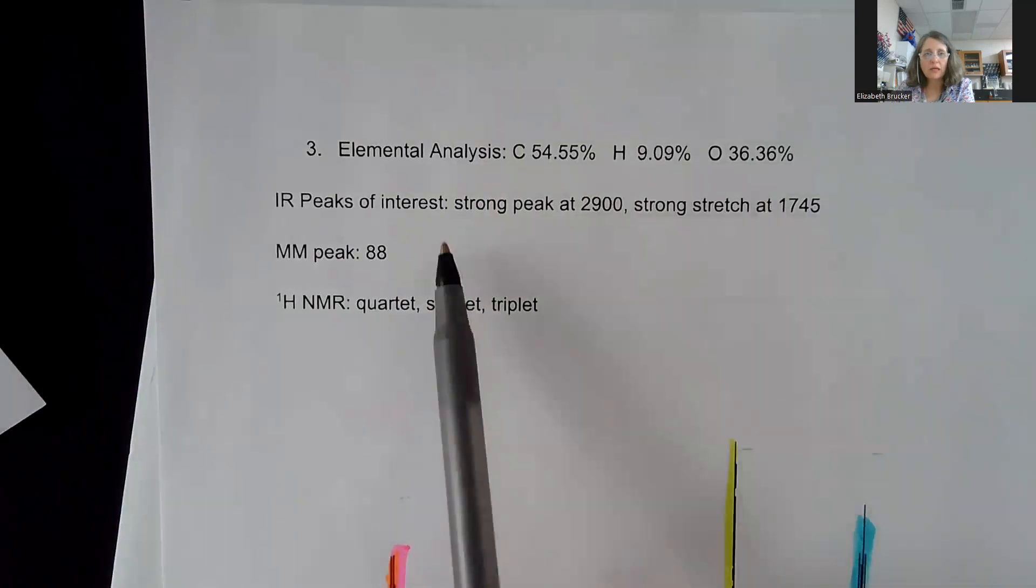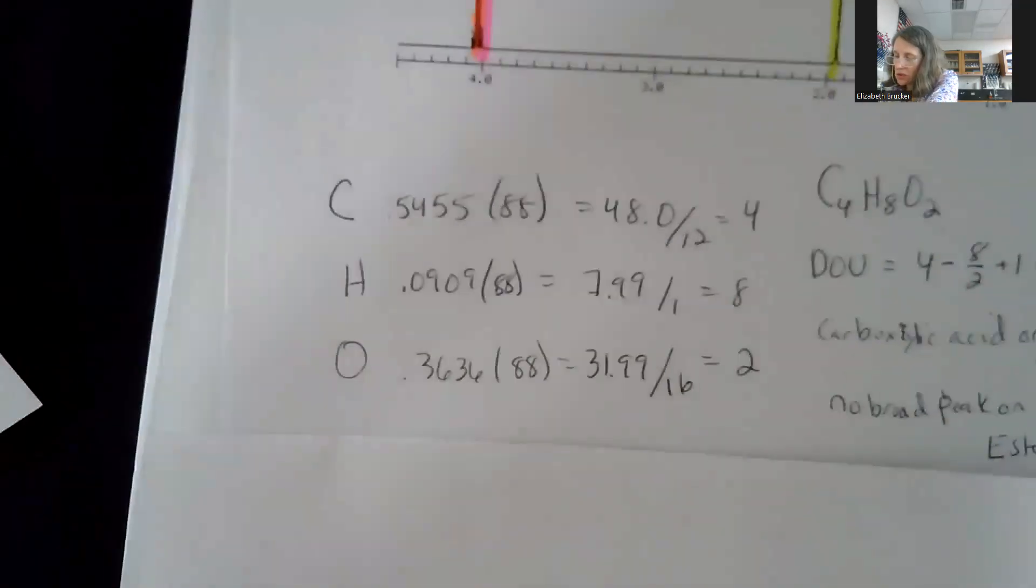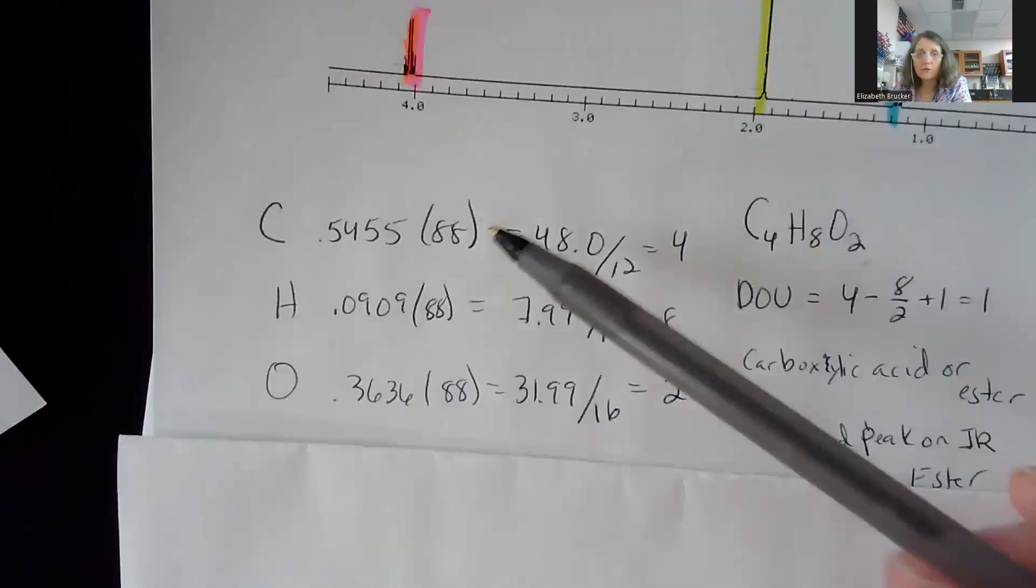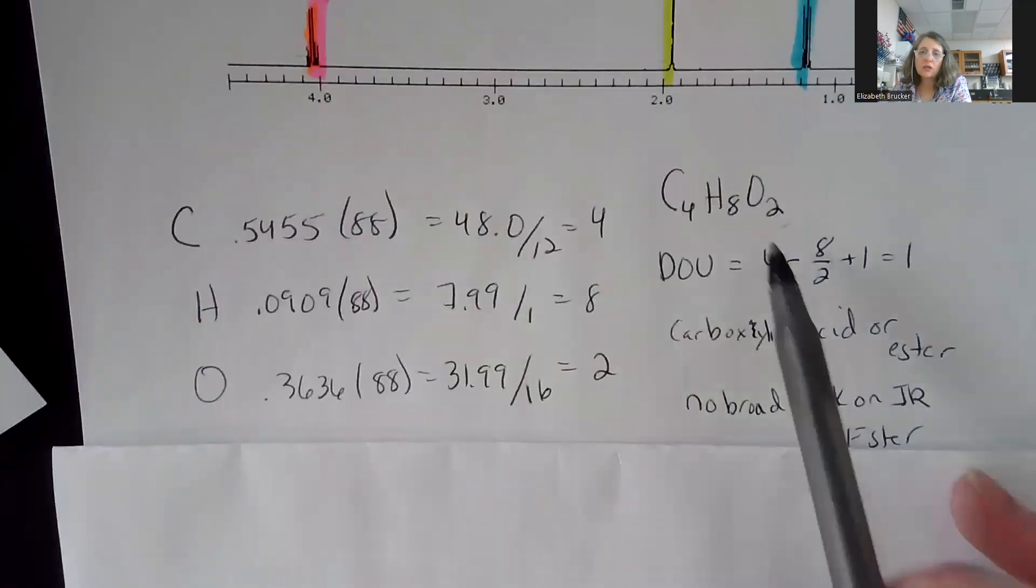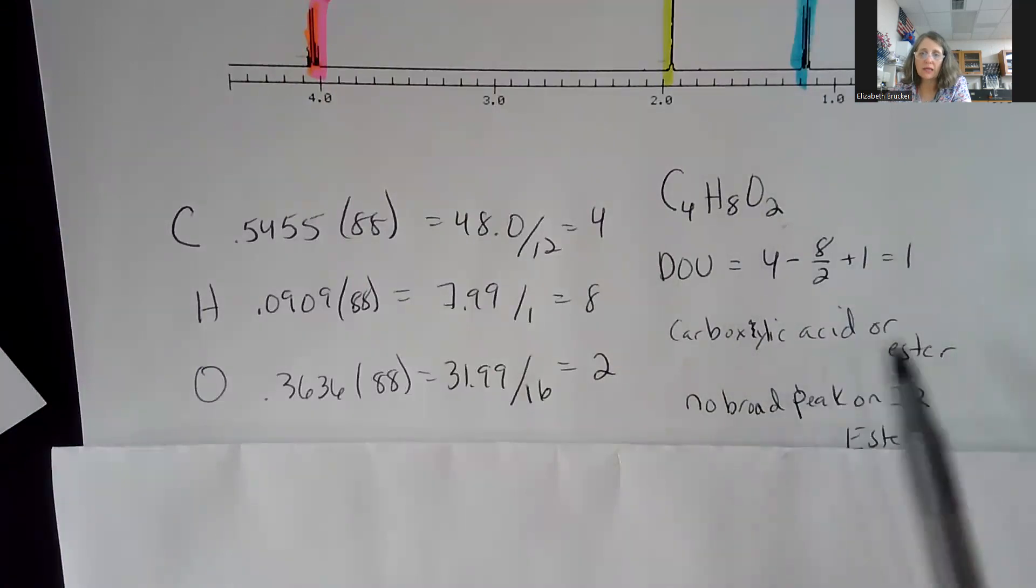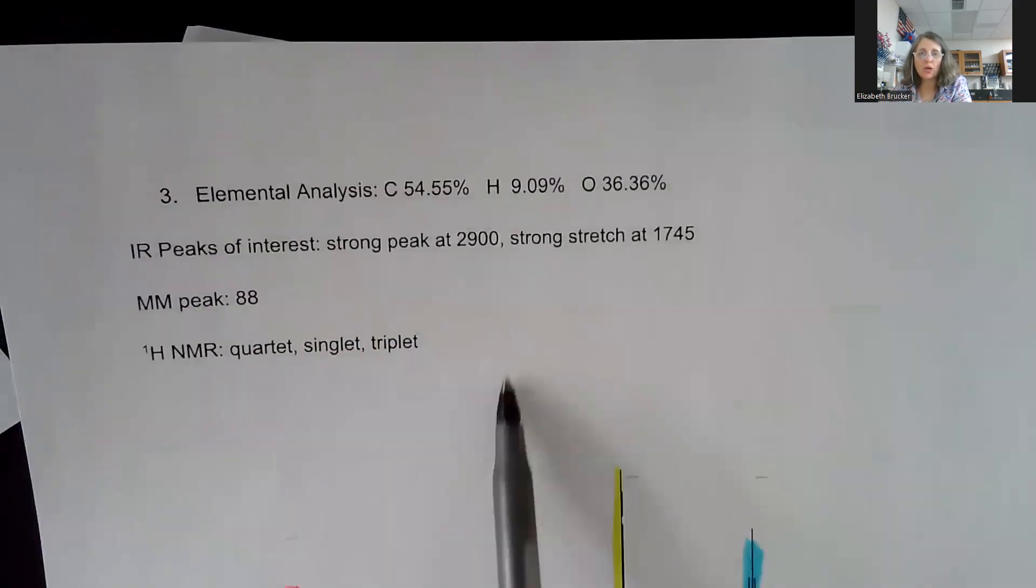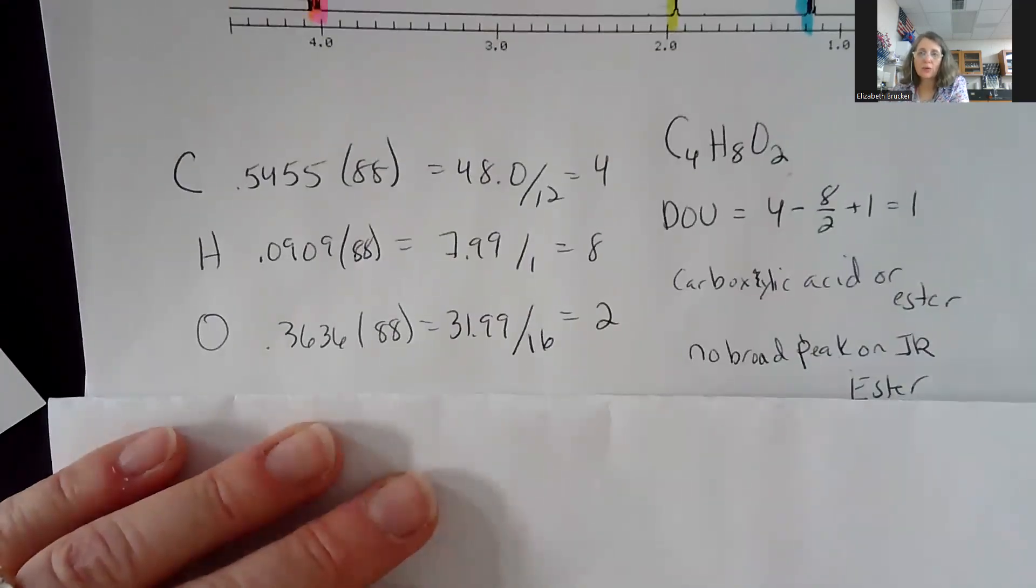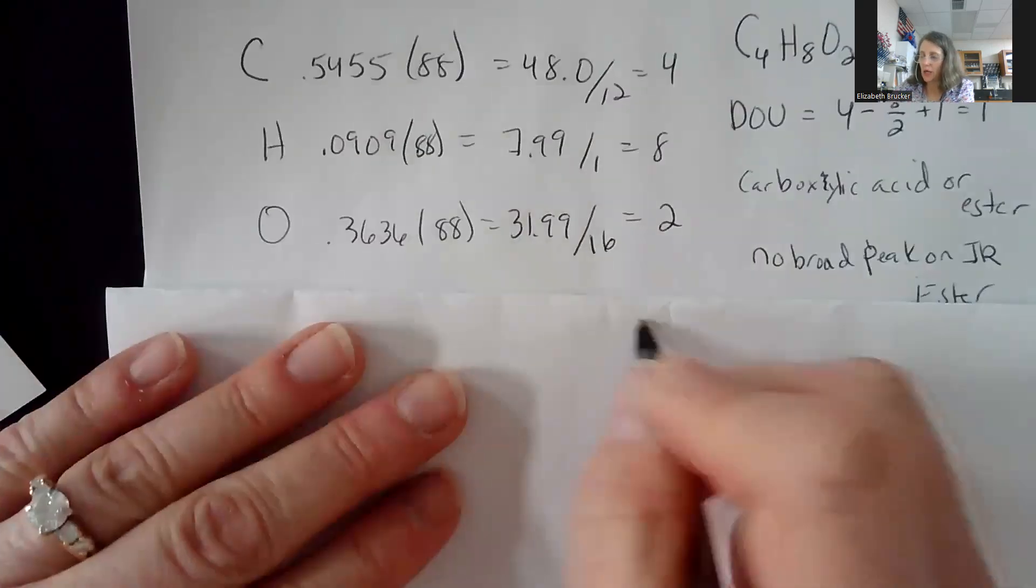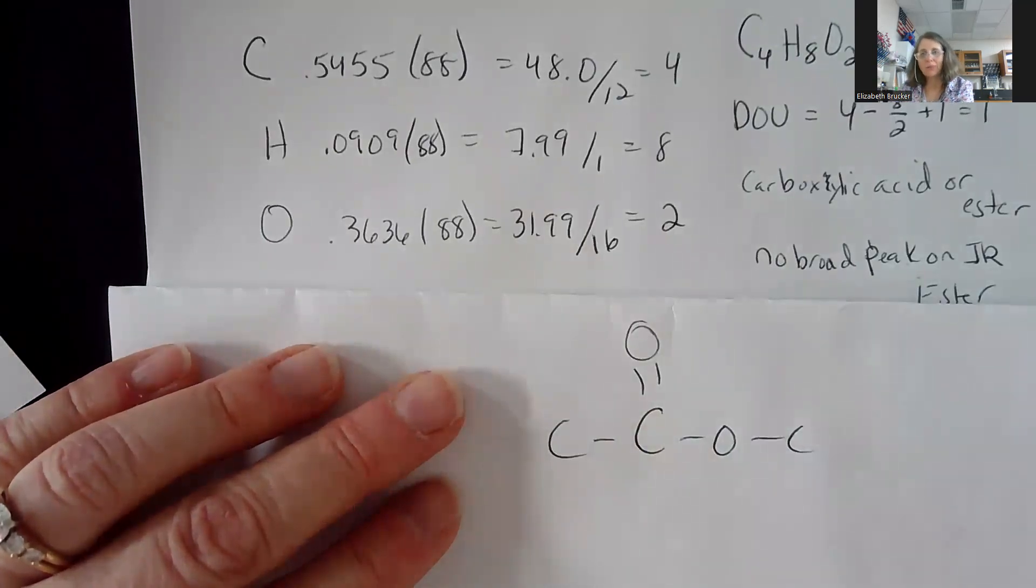Number three, percentages again. I have a strong peak, I have my molar mass peak, and I have a quartet, a singlet, and a triplet. So I do my formulas, so I get a 4, an 8, and a 2. My degree of unsaturation tells me I have a 1. So because I have two oxygens, it's a carboxylic acid or an ester. Those are my two. But because I don't have a broad peak on the IR, there is no broad peak on the IR, so I can't have a carboxylic acid. So it's got to be an ester. And please remember, an ester is going to have a C double bond O, O, and then you're going to have carbons on either side. And how the setup is is going to be dependent upon the splitting patterns.